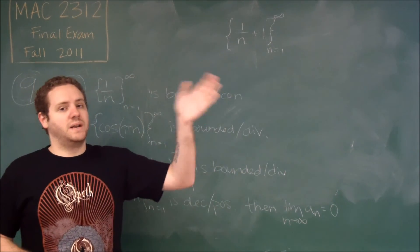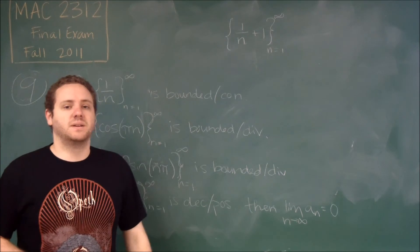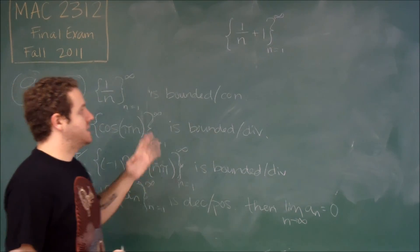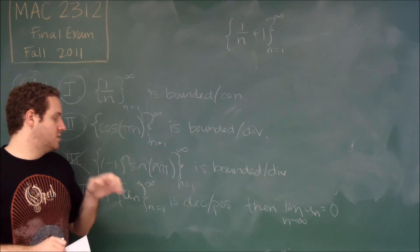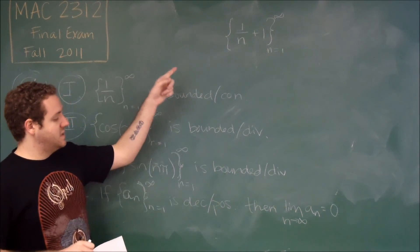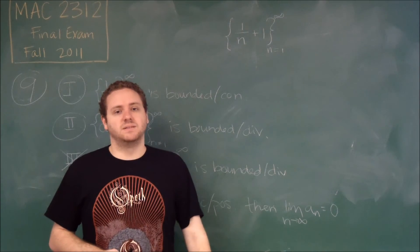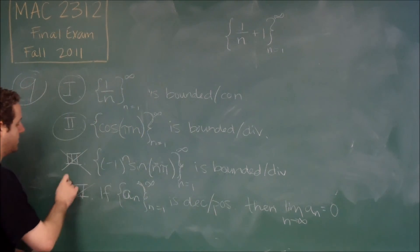But, it's getting closer and closer to one. It's kind of like curving down, if you think of it as like a graph. It's curving down, and it's getting closer to one. And, it converges to one. So, this is decreasing, this is positive, but its limit is definitely not zero. Its limit is one. So, this is not necessarily true.